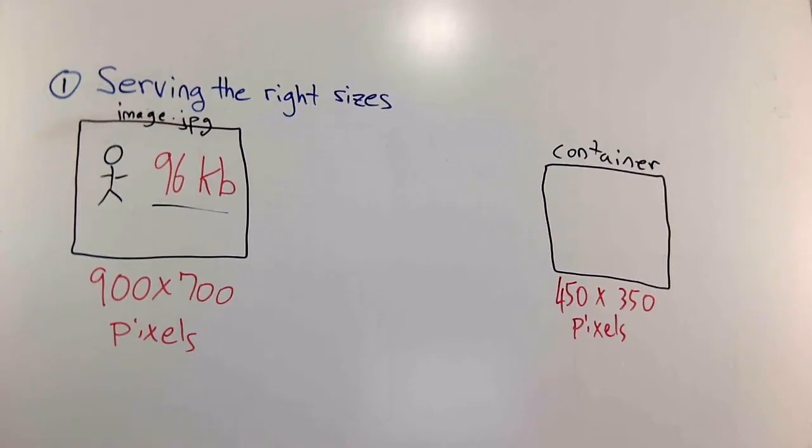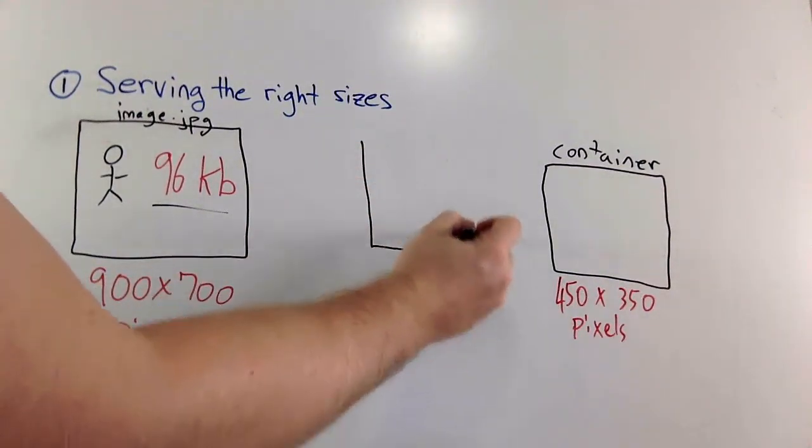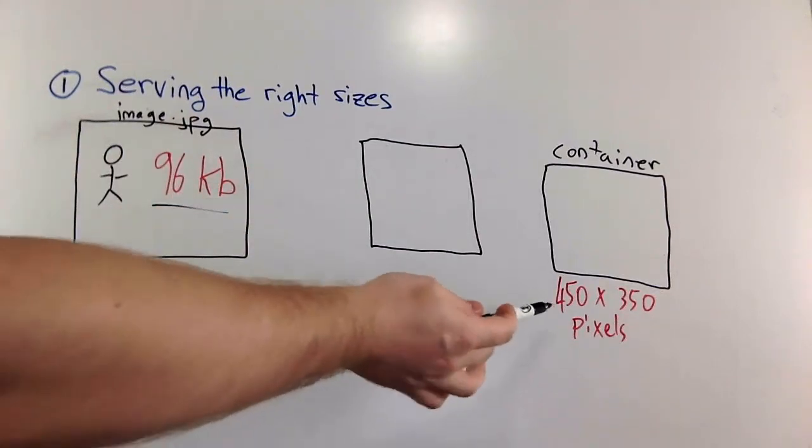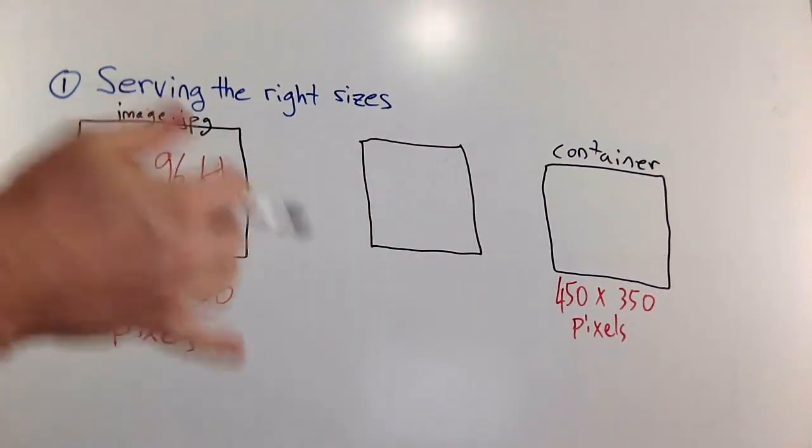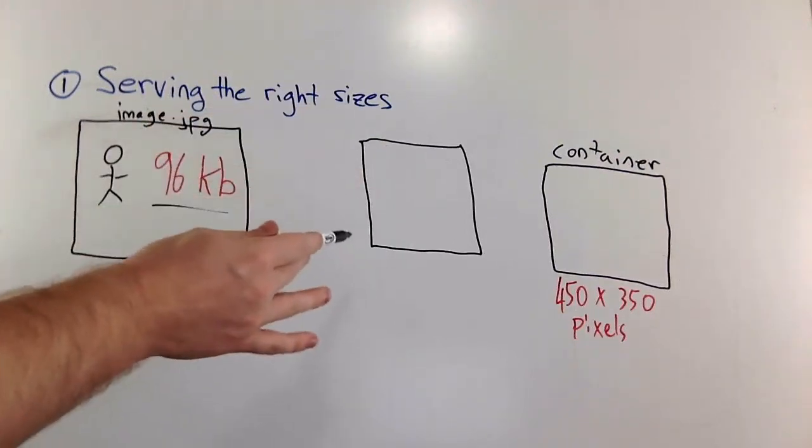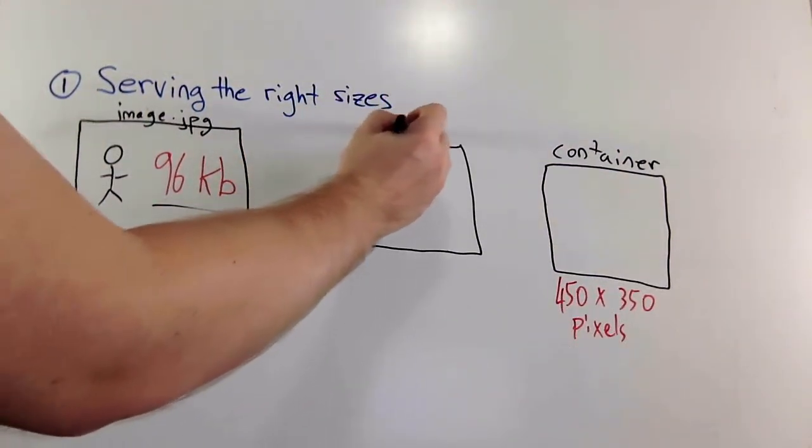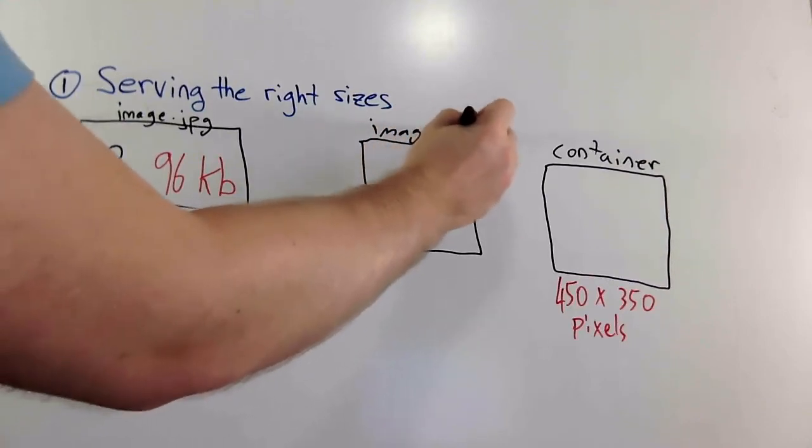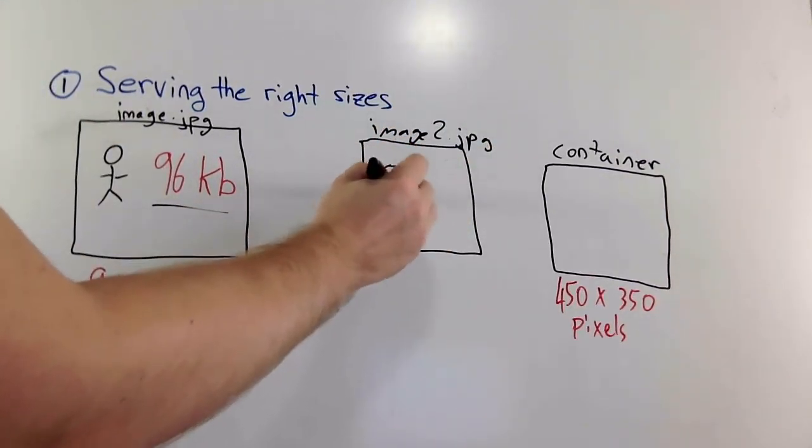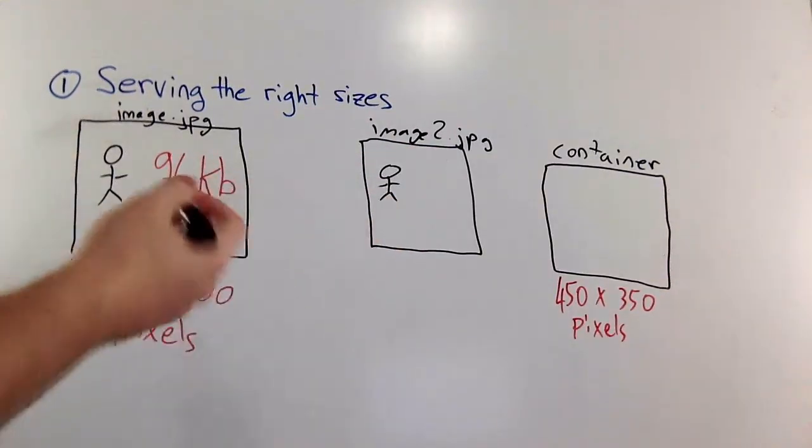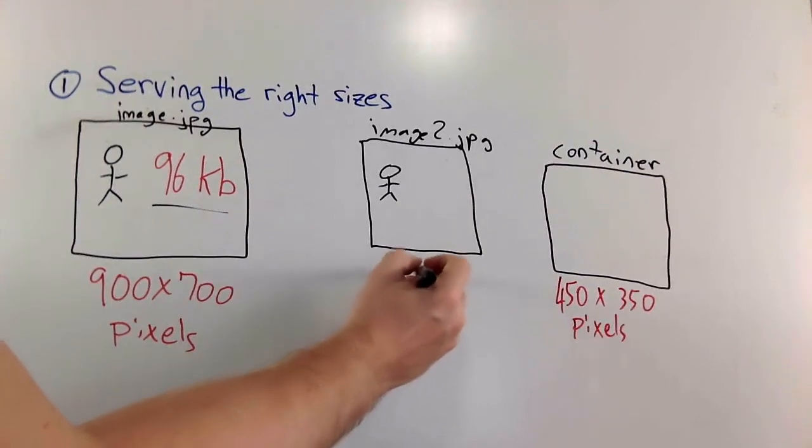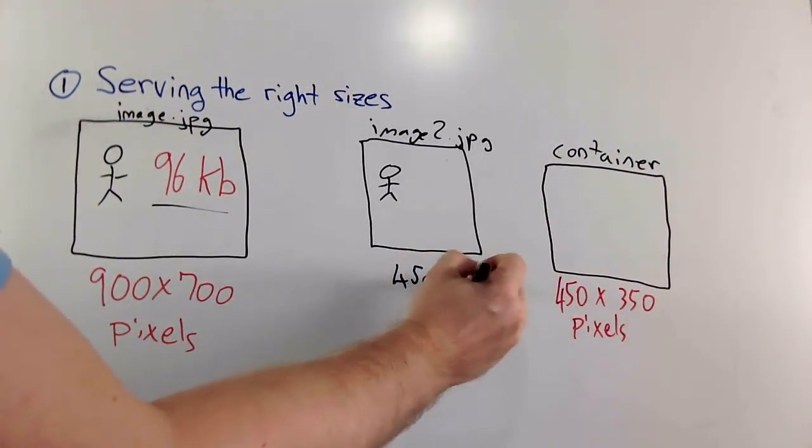So how can we fix this? What we really need to do instead of resizing with CSS alone, we need to create another derivative version of this image. Let's say we create a version that fits for this specific container. Maybe we have a media query in our CSS. We could do the same thing with images. We could have four or five different sizes of this image. And this is the exact same image, the only difference is that it's exactly that size container. So 450 by 350 pixels.